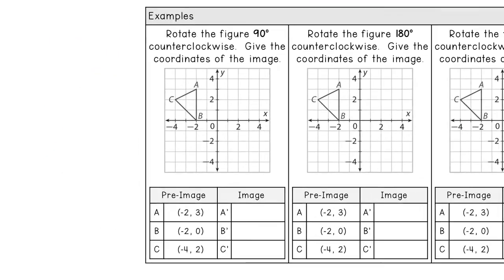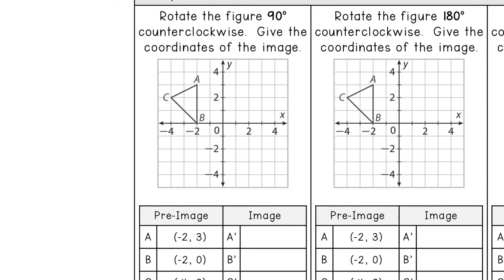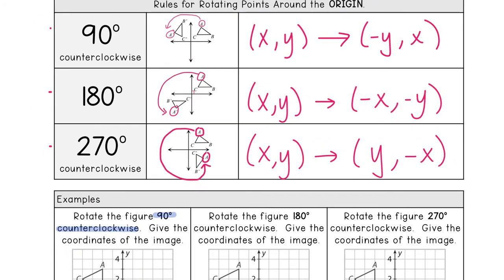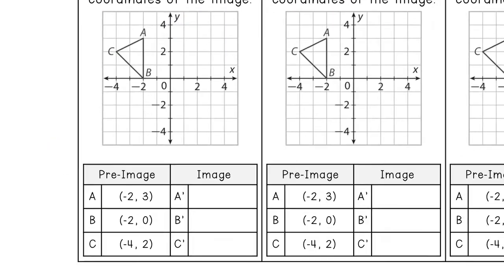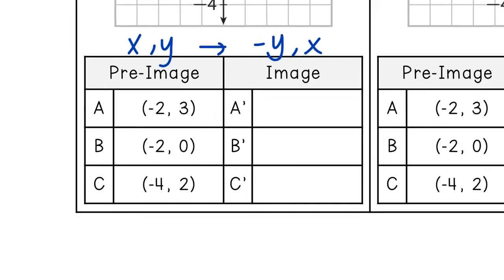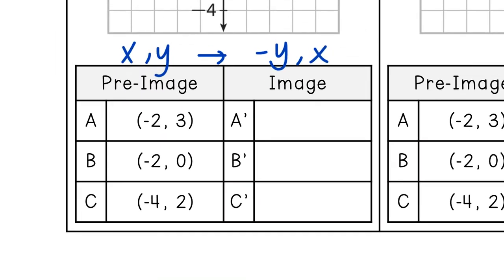So the first one says, rotate the figure 90 degrees counterclockwise. Give the coordinates of the image. So looking at my notes from above, for 90 degrees, we're going to change it to (-y, x). So I'm going to write the rule here so I don't forget it. (-y, x). So I'm going to change each point from the pre-image to the new point in the image.